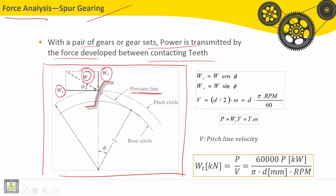Let's see here. We have phi is the pressure angle. Wt, the tangent force, is equal to W cosine phi. WR is equal to W sine phi.